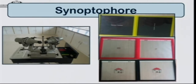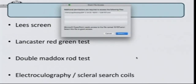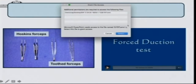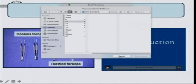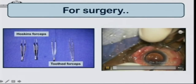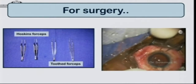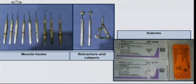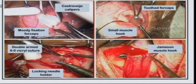The synoptophore for torsional measurements and the Lees Green and Lancaster Red Green tests are optional. Before planning management, a force duction test is needed to differentiate between paralytic and restrictive strabismus and plan which muscle to operate. We need a routine tooth forceps from the cataract surgery set or a Hoskins forceps. The squint set would have a series of muscle hooks — Jameson's and teaser hook — along with retractors and calipers. Special sutures include 6-0 or 8-0 Vicryl, sometimes 5-0 Ethibond.